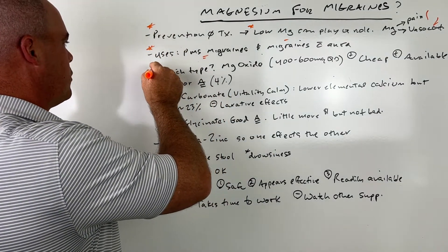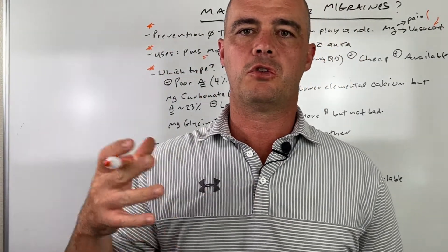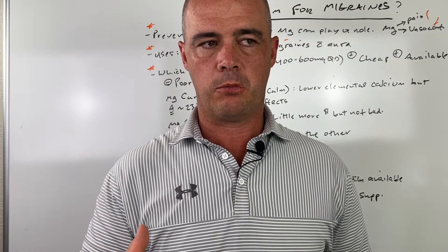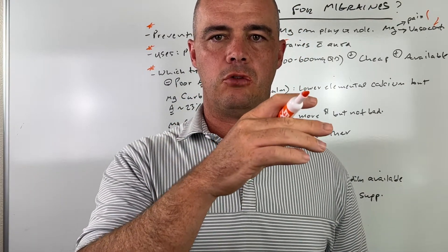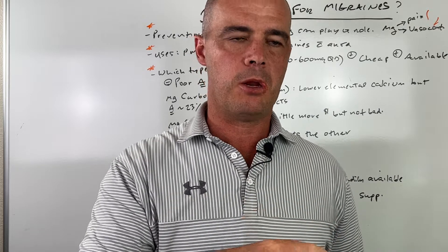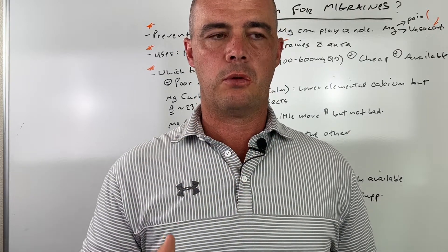Now, this is where the water gets a little muddy. There's all sorts of salt forms of magnesium available. So what I mean by that, you have magnesium oxide. Magnesium is chemically attached to oxide. There's magnesium carbonate, magnesium glycinate. So these are different salt forms.